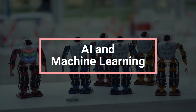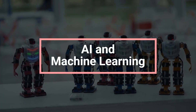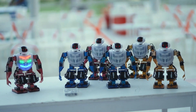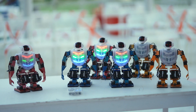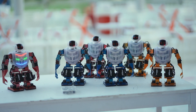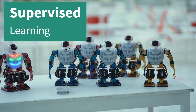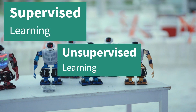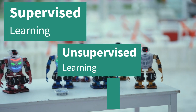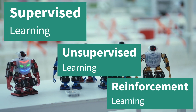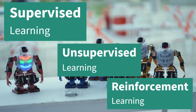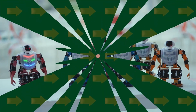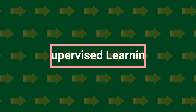Welcome back to our series on AI and Machine Learning. In this lesson, we'll explore the different types of machine learning and their unique characteristics. There are three primary types of machine learning: supervised learning, unsupervised learning, and reinforcement learning. Each type has distinct methods and applications, making them suitable for different kinds of problems. Let's start with supervised learning.